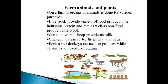Cow, goat, and sheep provide us milk and they are allowed to graze on dry grass to prevent fires. Sheep produce wool to make woollen clothes. Chicken and duck are raised for their meat and eggs. Ponies and donkeys are used to pull carts, while elephants are used for logging.